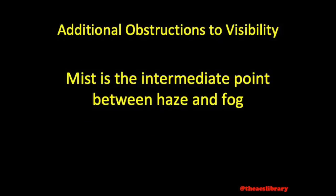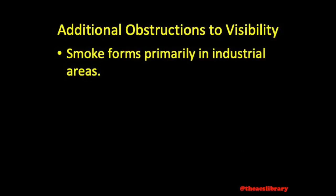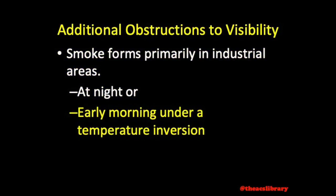Mist is the intermediate point between haze, which restricts visibility less than mist, and the more restricting fog. Smoke forms primarily in industrial areas at night or early morning under a temperature inversion. The warm air above creates a sort of lid, keeping the smoke inside.